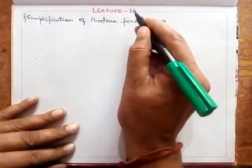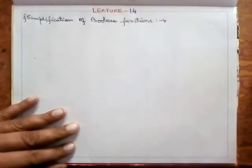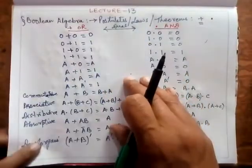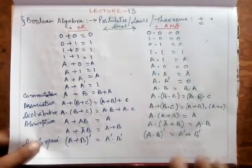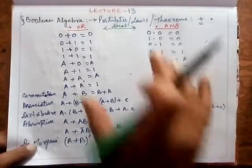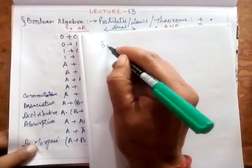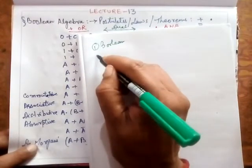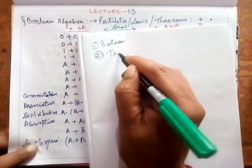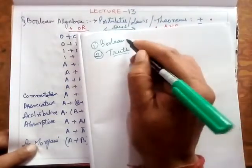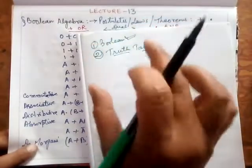Good morning. This is the fourteenth lecture and today I'll deal with the simplification of Boolean functions. In the last lecture I discussed Boolean algebra — Boolean postulates, laws, and theorems. Today I'll see the simplification of these. The proof of these theorems can be done by Boolean functions itself as the first method, and second we can do this by truth table.